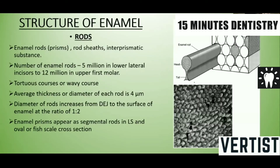Now we will see the structure of enamel. The enamel consists of enamel rods, rod sheath, and interrod substance. Enamel rods are also called prisms. The number of enamel rods ranges from 5 million in the lower lateral incisor to 12 million in the upper first molar. They follow a wavy or tortuous course, and the diameter of each enamel rod is 4 micrometers. This diameter increases from the dentino-enamel junction to the surface of the enamel at a ratio of 1:2.